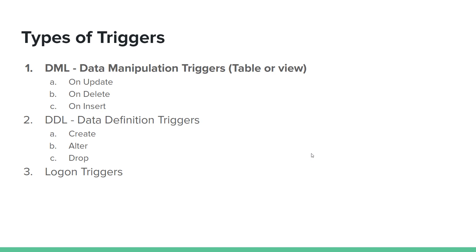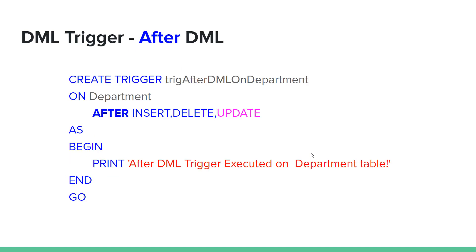For DML triggers, when a record is inserted, deleted, or updated on a table, the trigger is executed directly. After DML — meaning after insert, delete, or update — the trigger executes.